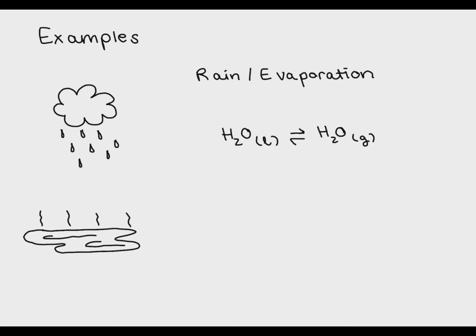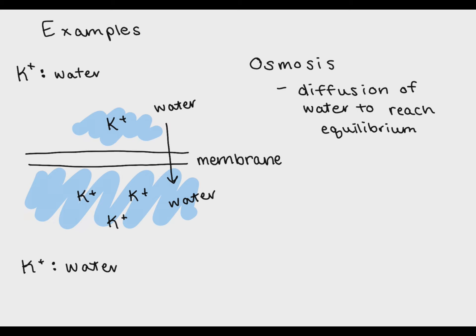And the last example is for anybody who really is interested in biology or going into the medical field. Osmosis is the diffusion of water through a membrane. Osmosis occurs to reach equilibrium, or the same concentrations of different molecules on both sides of the membrane.